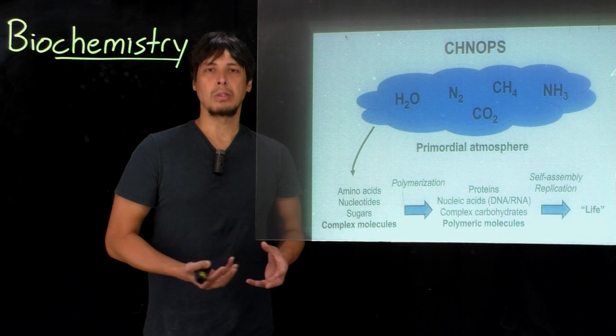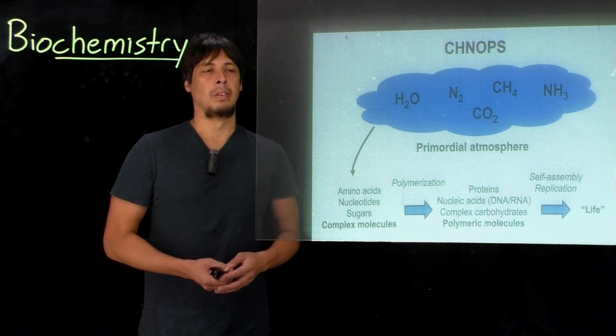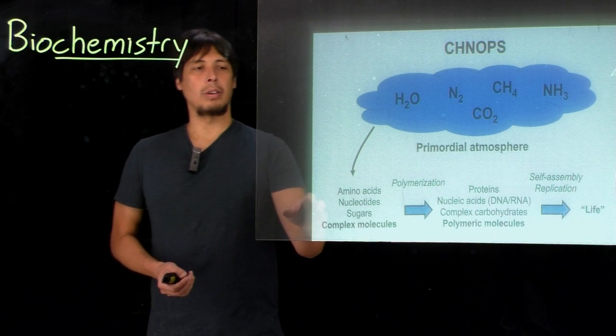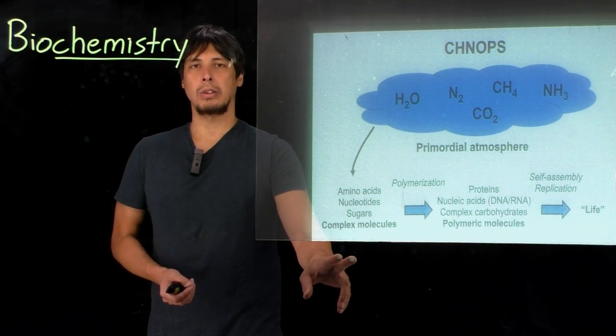Energy input from either lightning strikes, for instance, or from ionizing radiation from the sun might have allowed for formation of complex molecules, such as amino acids, nucleotides, and sugars.